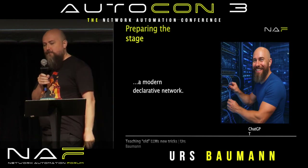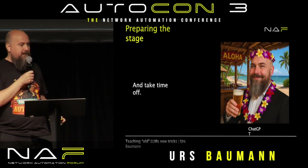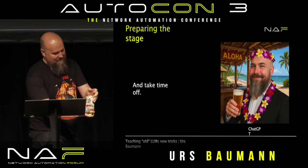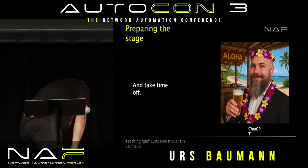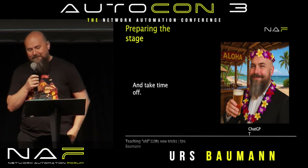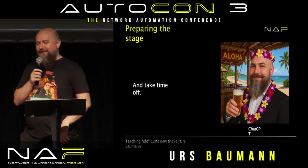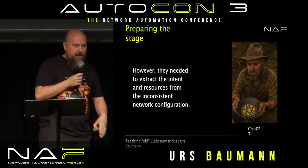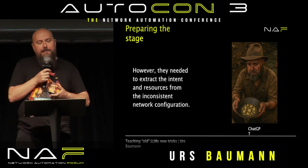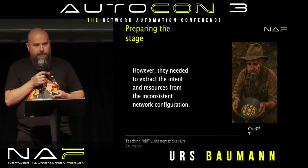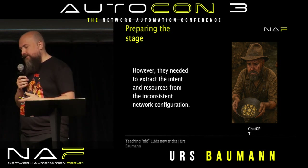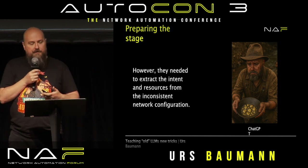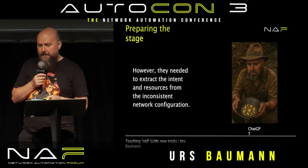And they dreamed of a really nice, modern, declarative network. Of course we want to get there — but it's a hard road. How can we get from a messy network to that? There are multiple ways: we can write parsers, we can dig into all the configuration. I was thinking — everyone talks about LLMs — could we maybe use an LLM for this? It's kind of good at summarizing, guessing, and hallucinating. So why not hallucinate with my network?